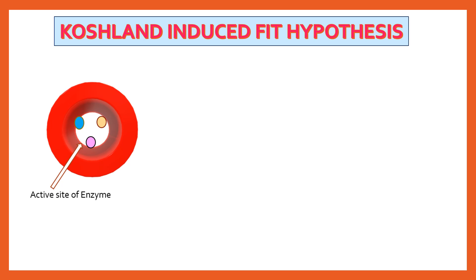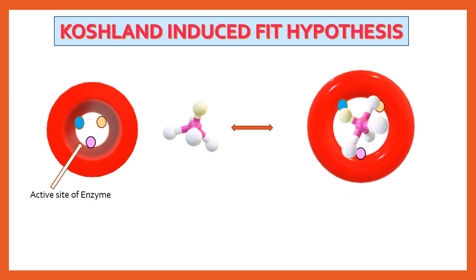Here is an illustration of Koshland's Induced Fit Hypothesis. The enzyme has an active site with amino acids that interact with the substrate. As the substrate arrives and binds to the active site, this binding induces conformational changes in the enzyme, and finally a stable enzyme-substrate complex is formed.